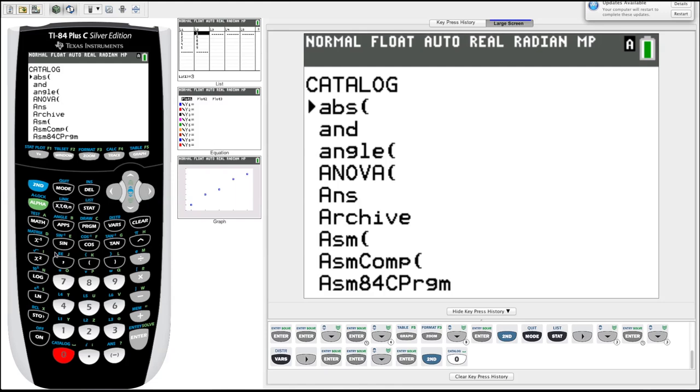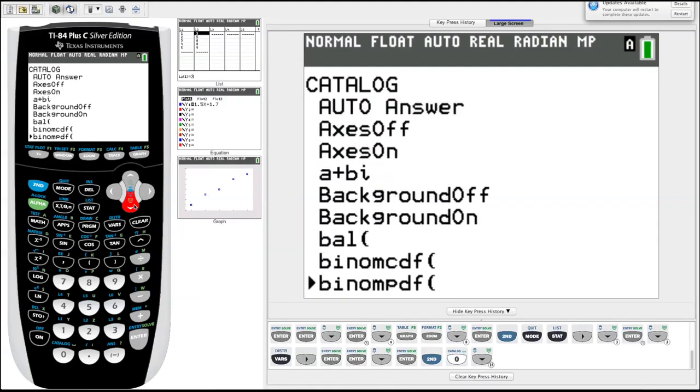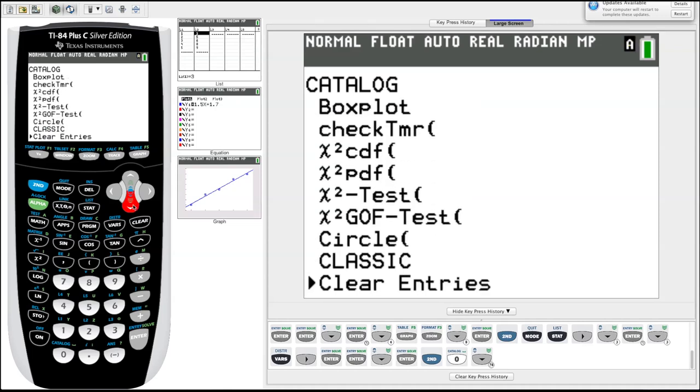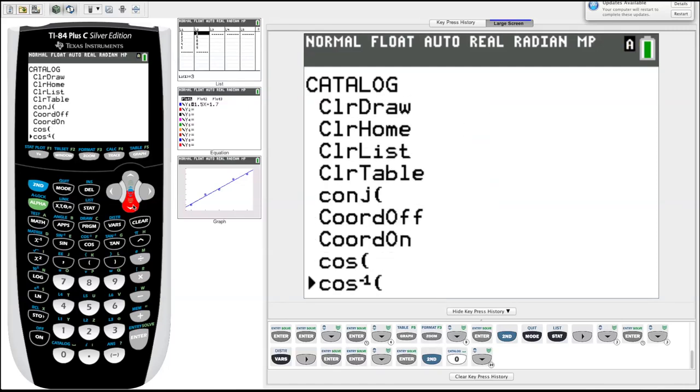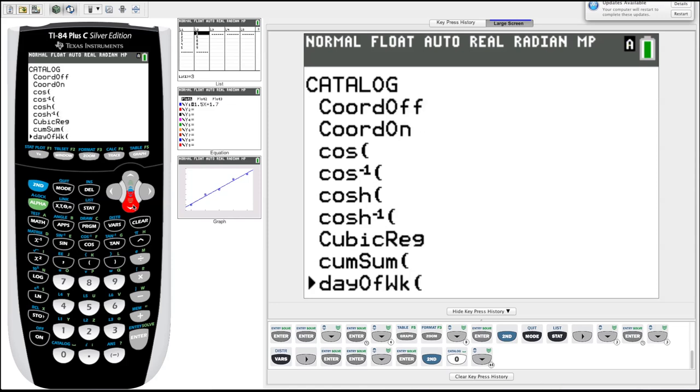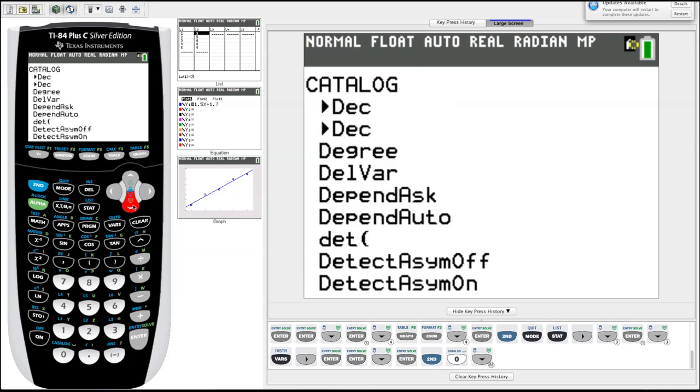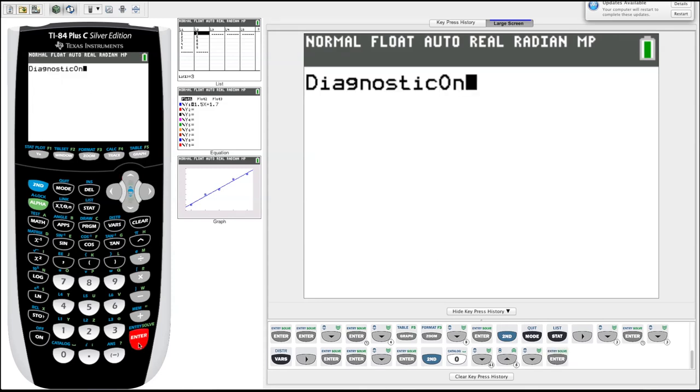And if we scroll down, we're going to scroll down until we get to the D, we're going to look for something called diagnostic on, and that will turn on the calculation of those r squared. Then you'd have to go back and recalculate your linear regression if you want to see those r squared values, r and r squared values. Okay, keep scrolling. We're down to D. It's going to be here soon. All right, there it is. Passed it. All right, so we go up to diagnostic on. You just hit enter. Enter again. Done.